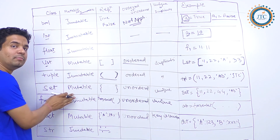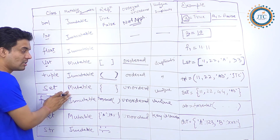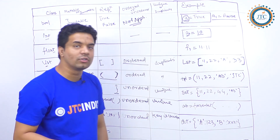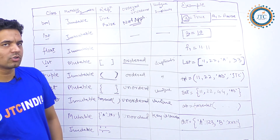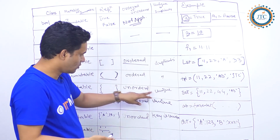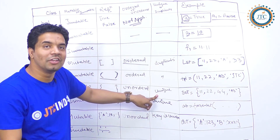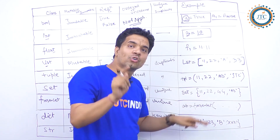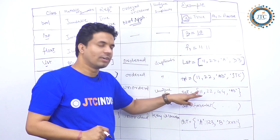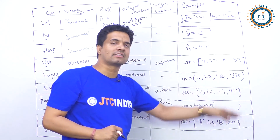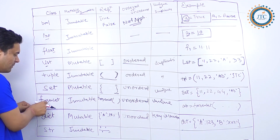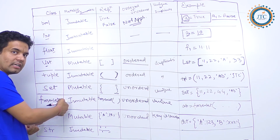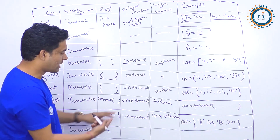Set is mutable. You declare a set using curly braces. Set is unordered — there is no guaranteed order maintained; elements can be stored in any order regardless of insertion order. Set stores unique elements only — no duplicates. You can store different types of elements in a set. Frozen set is the immutable version of set — it is unordered and unique, but cannot be modified.